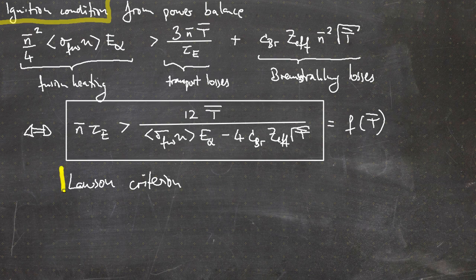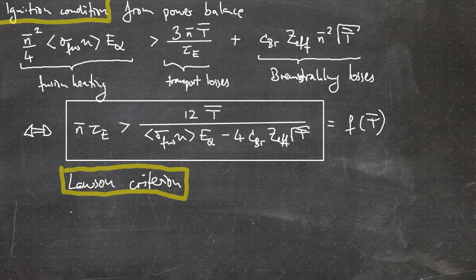The Lawson criterion gives us the values of density and energy confinement time that we need to achieve to get a burning plasma. Lawson derived that in 1957; he was an engineer who shared his office with a fusion physicist. He felt the responsibility to pin down unrealistic expectations of his enthusiastic physics fellows — however, his physics fellows looked at the inequality and said, 'Now we precisely know which parameters we need to achieve.'